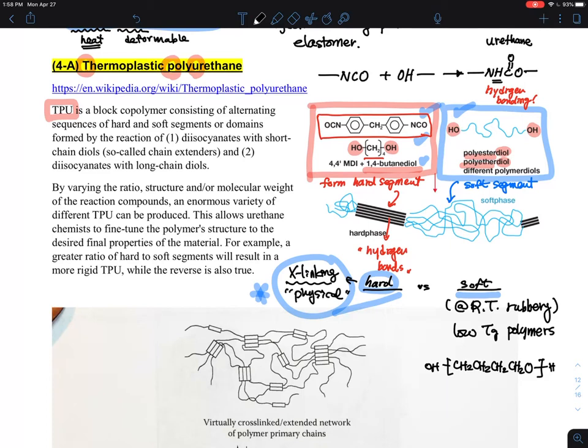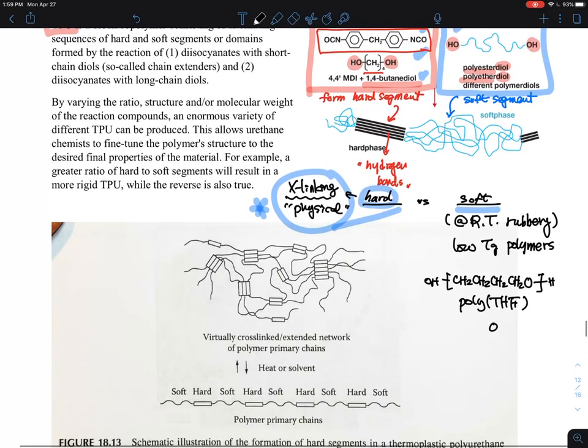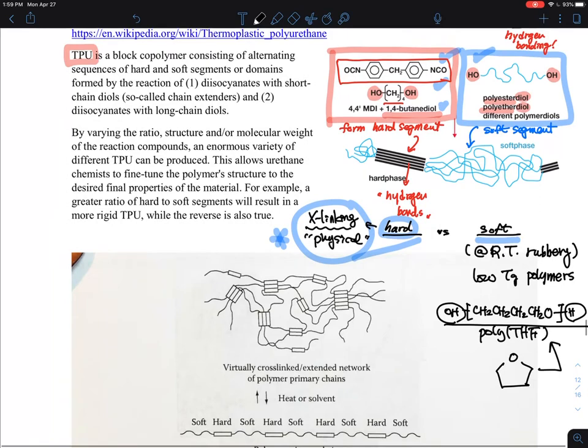There's polyTHF if you remember the chemical structure of THF. THF looks like this, and they can do ring opening polymerization to make this. This is a very low Tg polymer. That's an example, and there are a lot of different other segments as well.